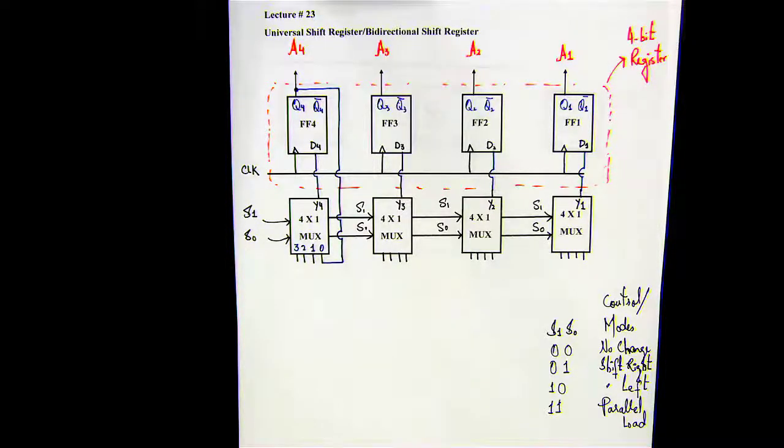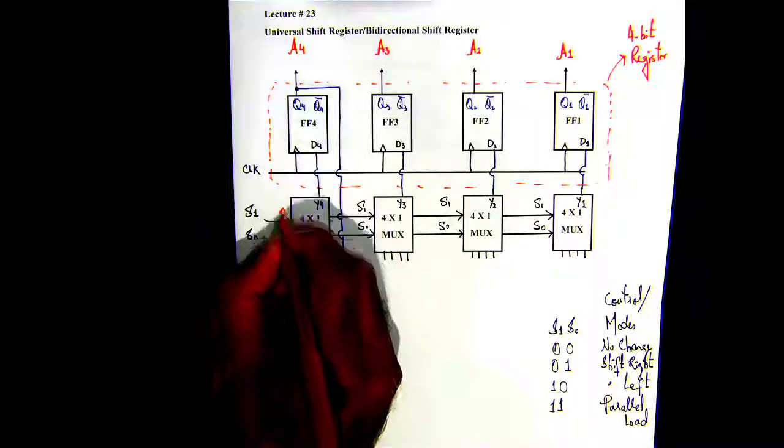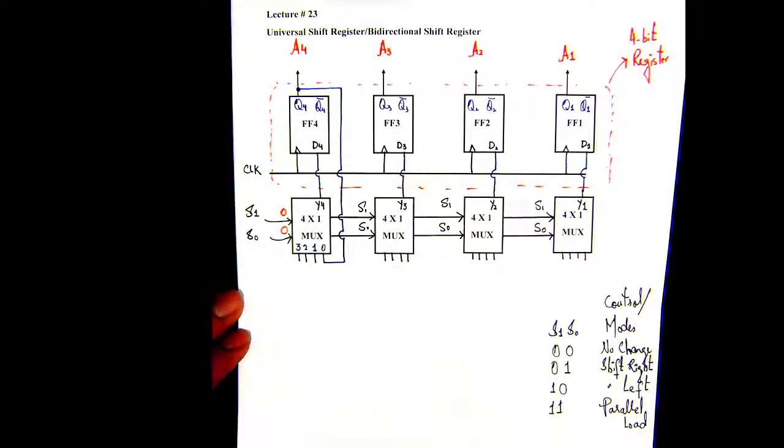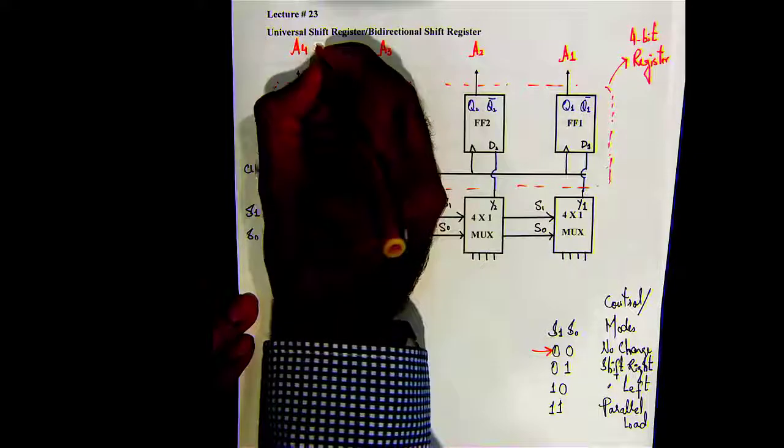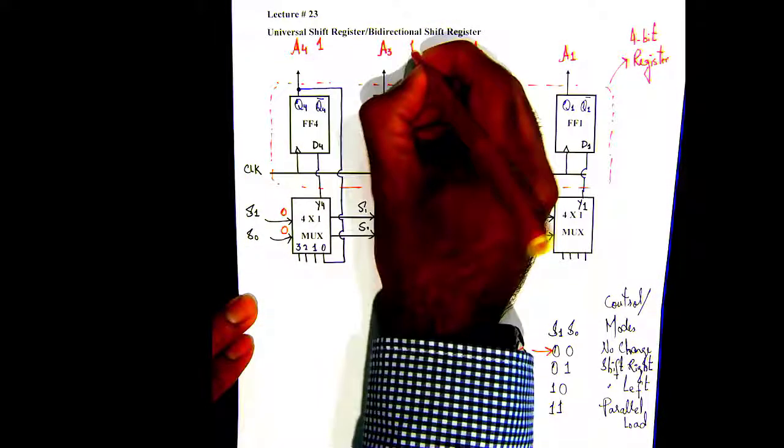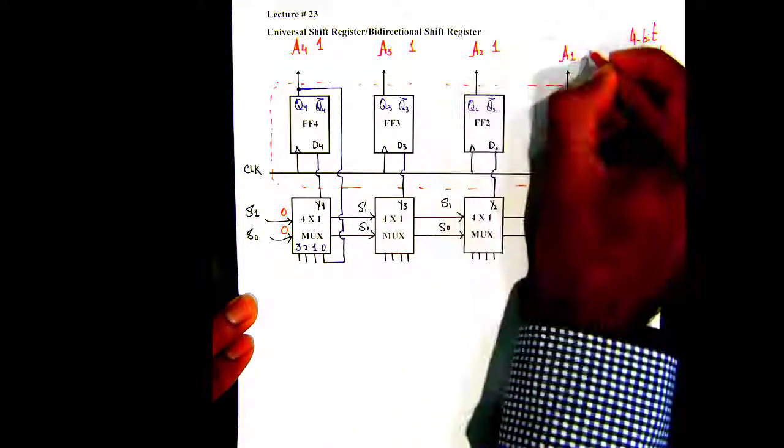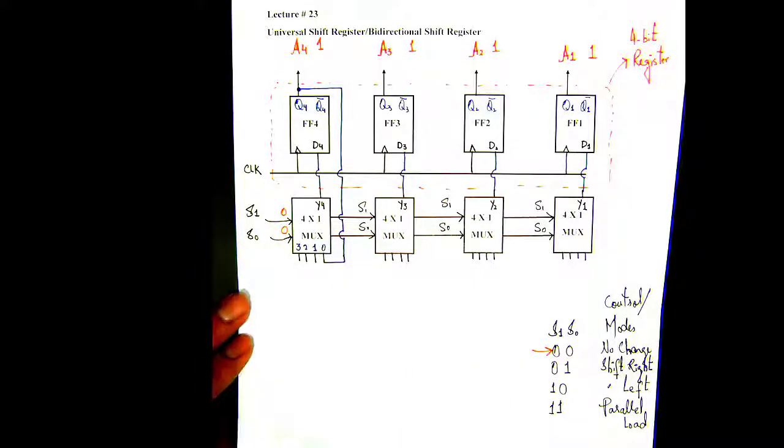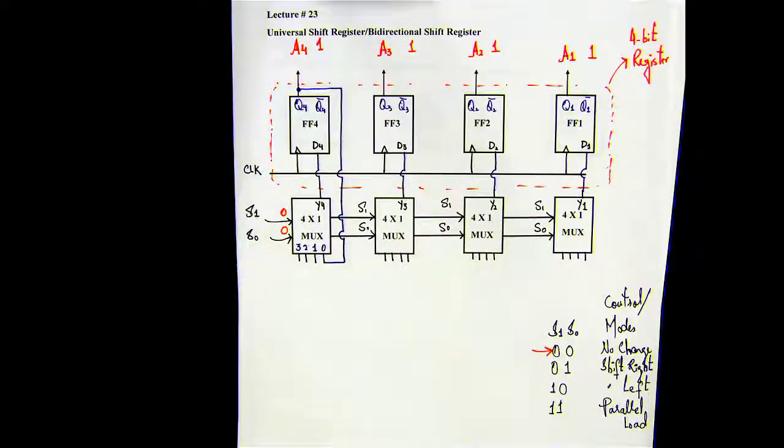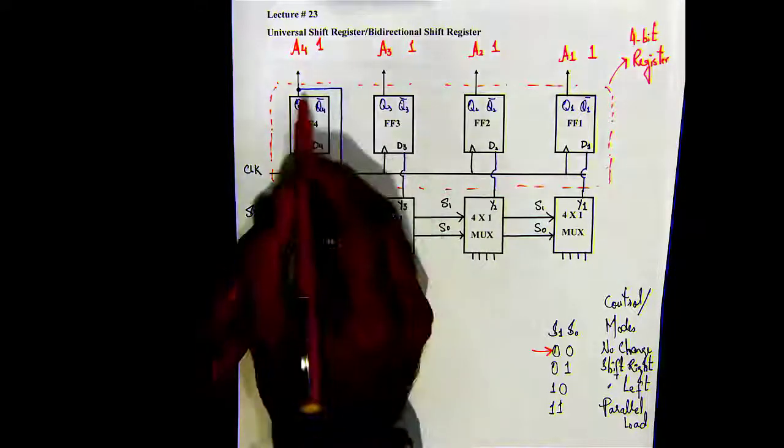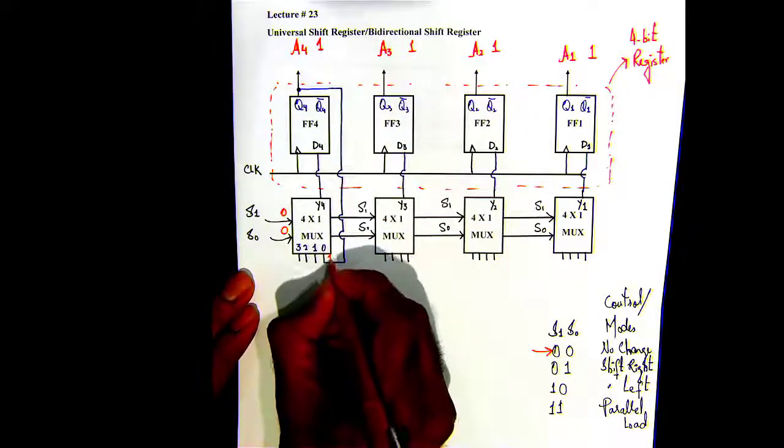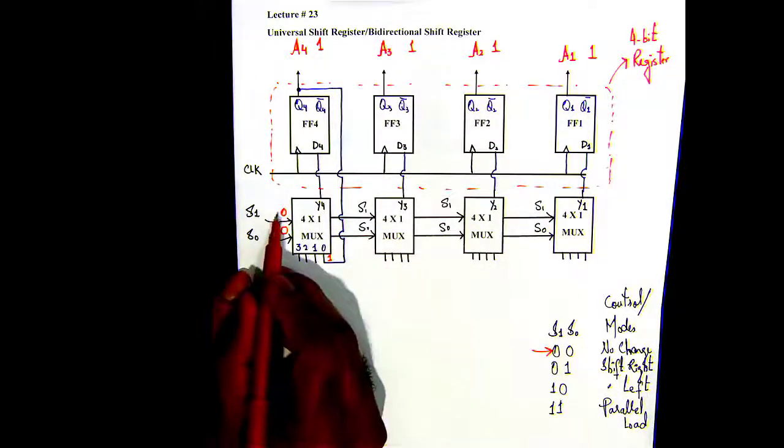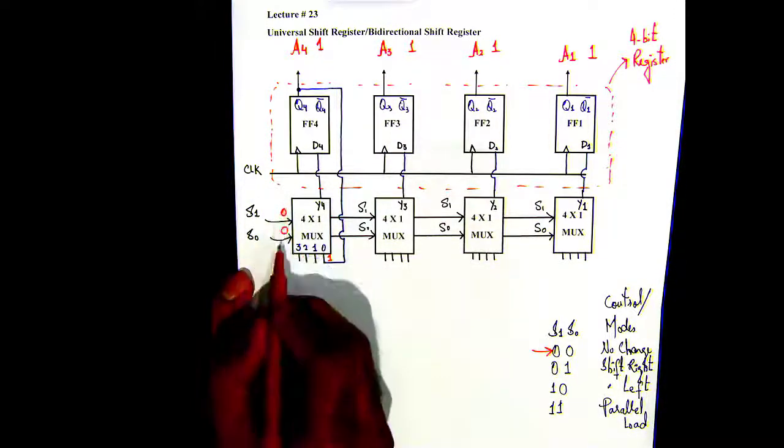There's not really rocket science right here. So say if my S1 and S0 selector switches are set to zero zero, and this is when I don't want any change, so say if this is one initially, this is one, A2 is one, A1 is one. When selector switches are zero zero, I want this data to remain same: no change.